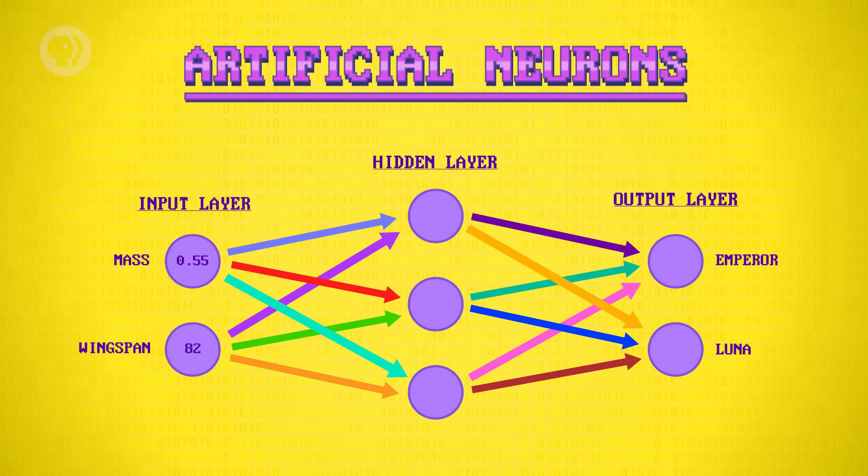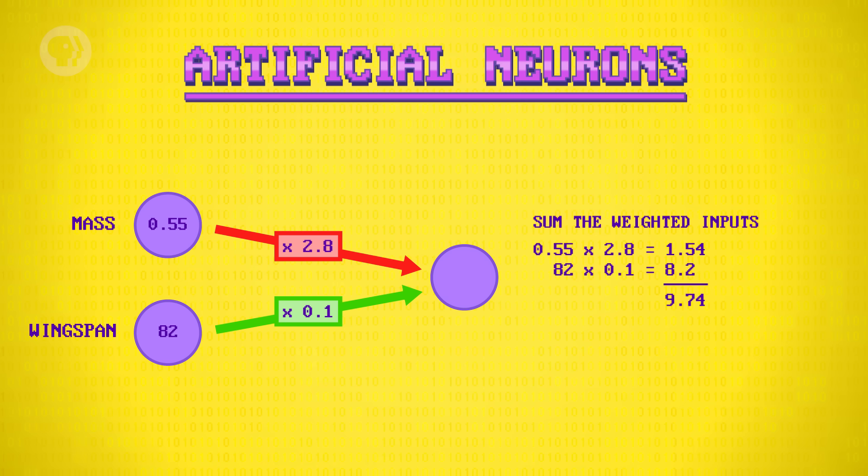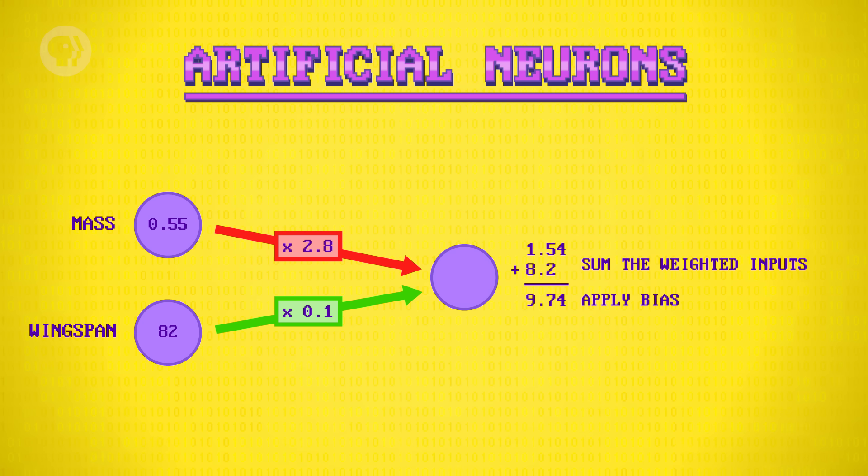To see how this is done, let's zoom into one neuron in the hidden layer. The first thing a neuron does is multiply each of its inputs by a specific weight. Let's say 2.8 for the first input, and 0.1 for its second input. Then it sums these weighted inputs together, which in this case is a grand total of 9.74. The neuron then applies a bias to this result. In other words, it adds or subtracts a fixed value. For example, minus 6 for a new value of 3.74.